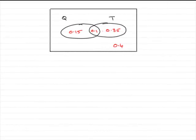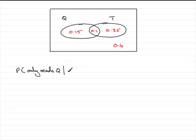Now in this part of the question what we need to work out is the probability that the student only reads Q. So just write that down here, only reads Q given that they read a paper.